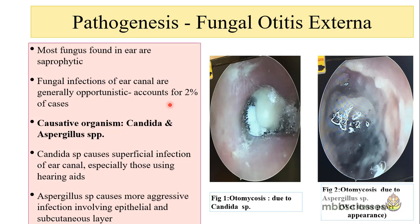The causative organisms — the fungi which cause otomycosis — are mainly Candida species and Aspergillus species. Candida species are yeasts which cause superficial infection of the ear canal, and they are especially a problem in people using hearing aids. Aspergillus species cause more aggressive infection because it involves both the epithelium and the subcutaneous layer.